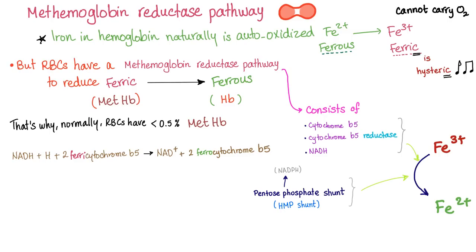Iron in hemoglobin is normally in the ferrous state, but it auto-oxidizes from ferrous to ferric naturally. However, Fe3+ cannot carry oxygen — ferric is hysteric. We have mechanisms to defend against this. RBCs have a methemoglobin reductase pathway — it reduces ferric into ferrous. This consists of cytochrome B5 reductase and NADH. Normally, red blood cells have less than 0.5% methemoglobin of total hemoglobin.